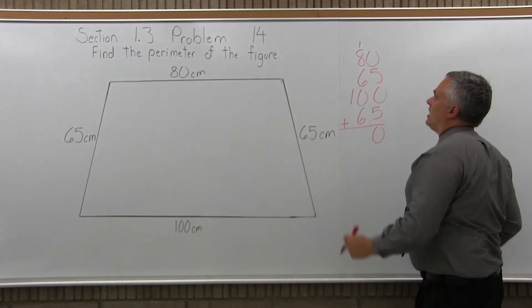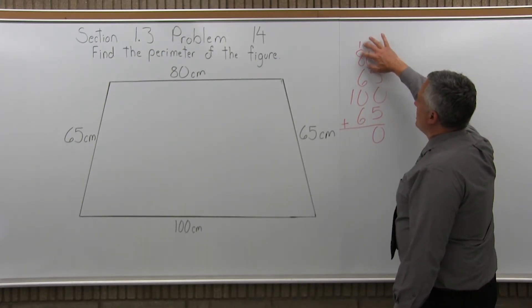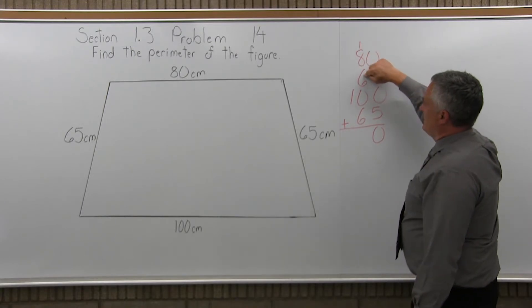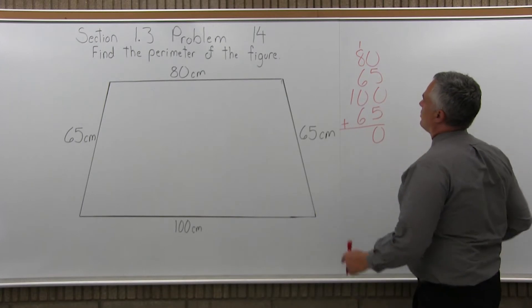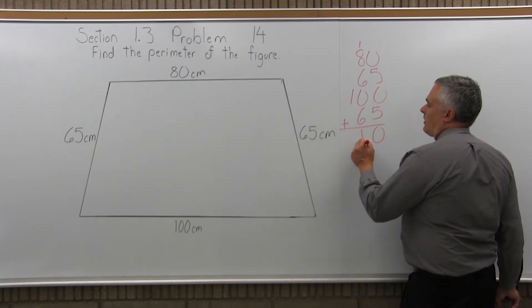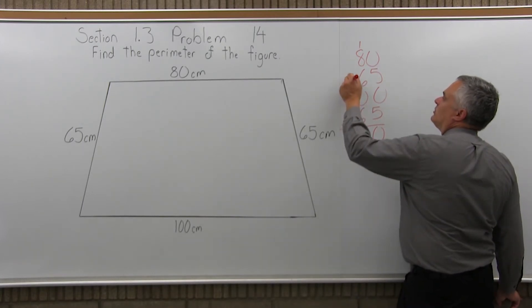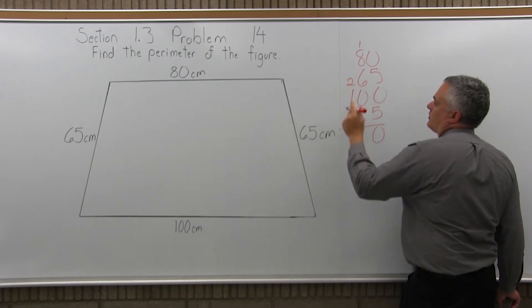Add up the next column. 1 plus 8 is 9, 9 plus 6 is 15, 15 plus 0 is still 15, 15 plus 6 more is 21. So, for 21, write the 1, carry the 2, and then 2 plus 1 is 3.